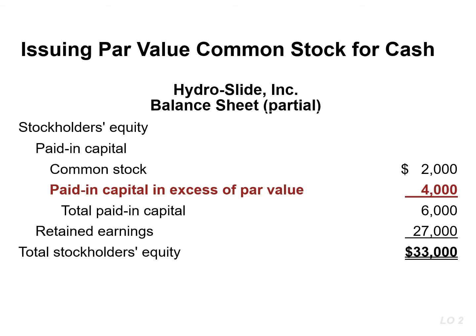This $6,000 represents the contributed capital. If this company has retained earnings of $27,000, the stockholders' equity section of the balance sheet would report $6,000 in paid-in capital and $27,000 of retained earnings, for a total of $33,000 in stockholders' equity.